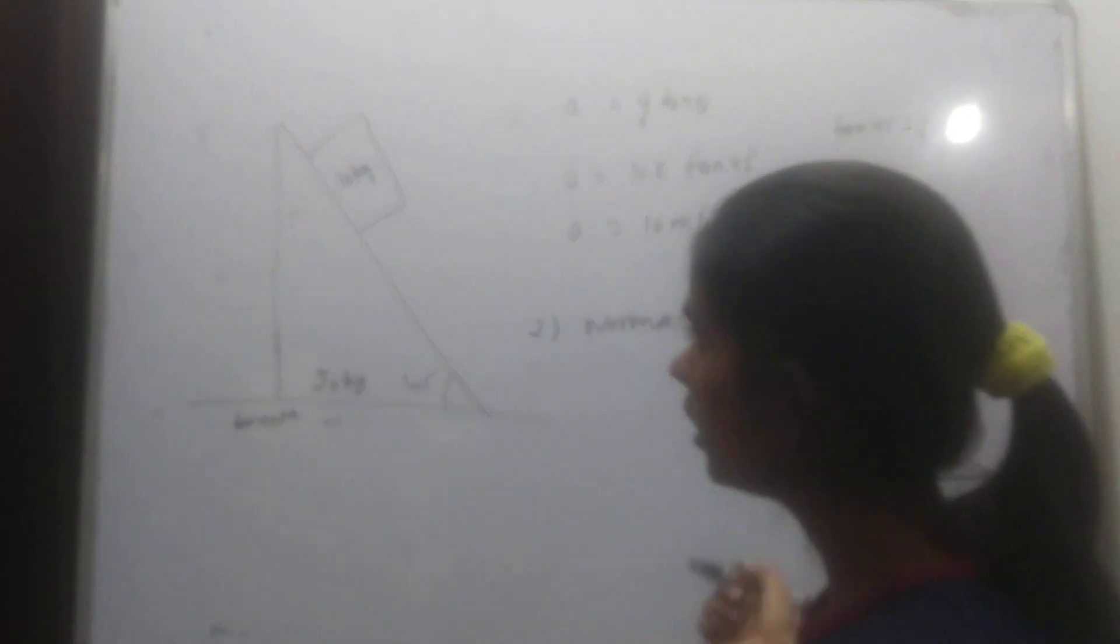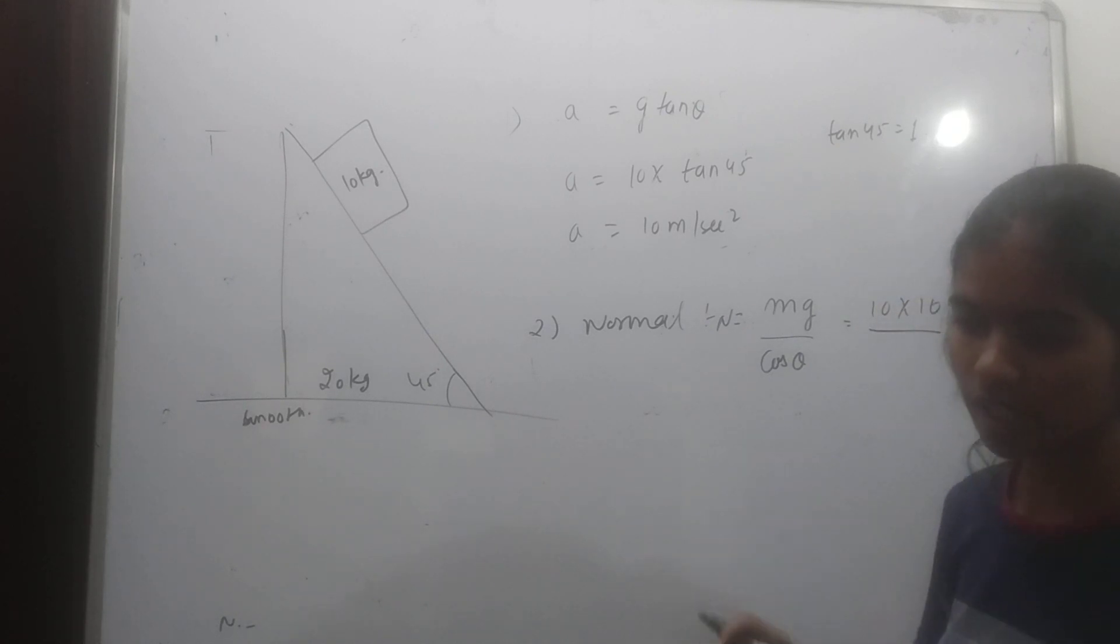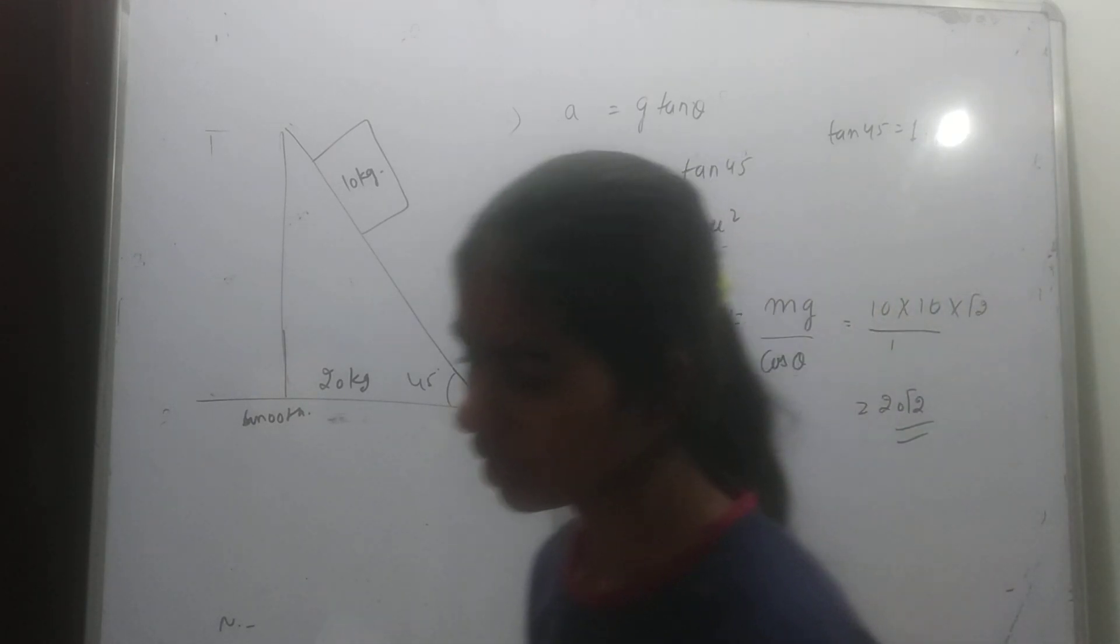We use components. 10 times 10 with respect to the wedge, that's 100 times 1 over root 2, which gives us 20 root 2 - that is the normal reaction.